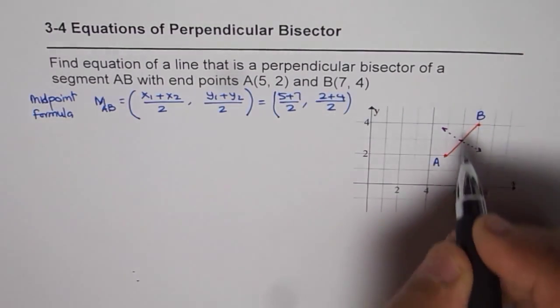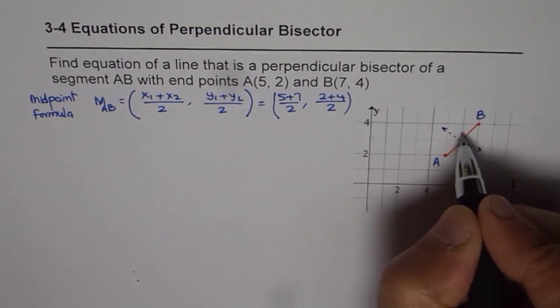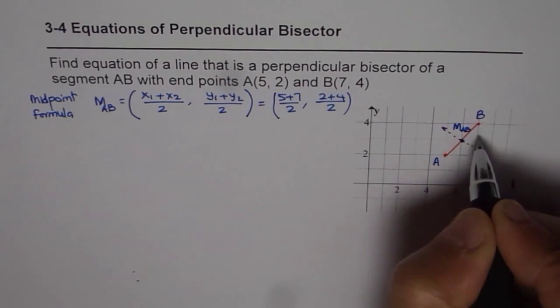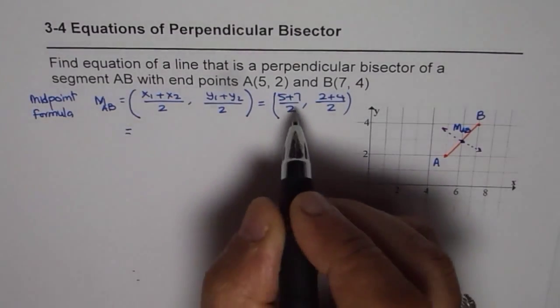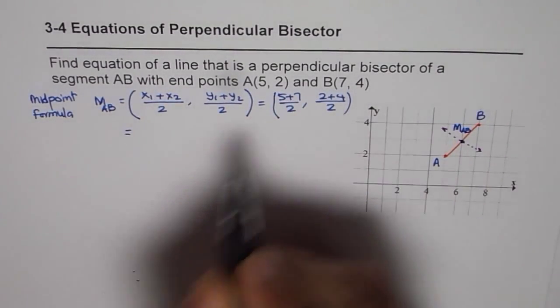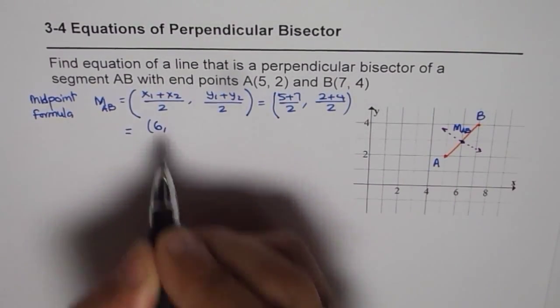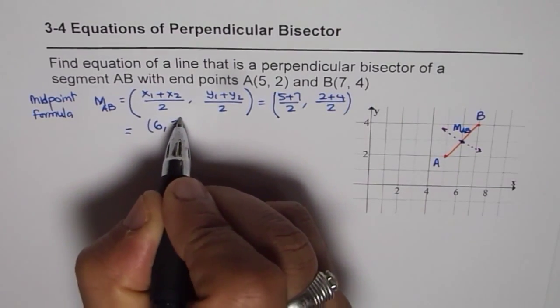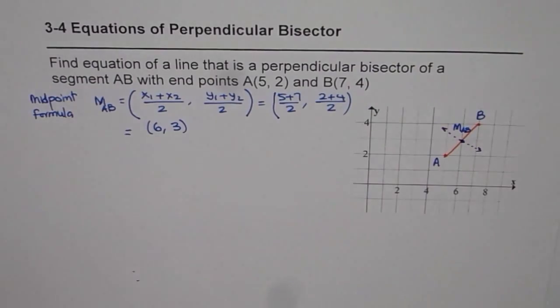Using the formula, we get the midpoint at (5+7)/2 and (2+4)/2. Let me call this point M_AB, the midpoint of segment AB. 5+7 is 12, divided by 2 is 6. And 2+4 is 6, divided by 2 is 3. So (6,3) is the midpoint of the segment.